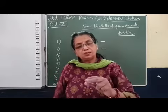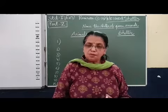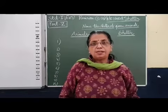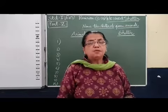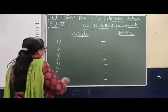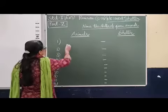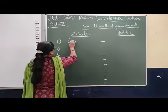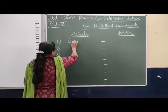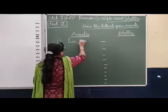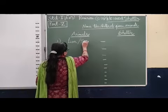So first let me list up the names of animals, then we will write their shelter name or home's name. First we can take lion or tiger.